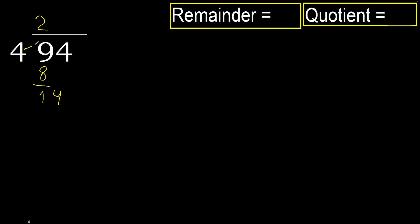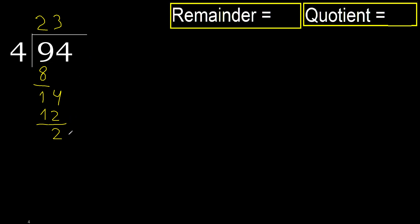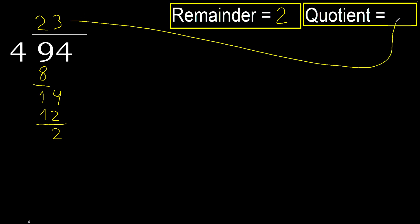4 multiplied by 4 is 16, which is greater. 4 multiplied by 3 is 12. Subtract next — that is not the remainder. Therefore finish it: 2. The answer is 23.